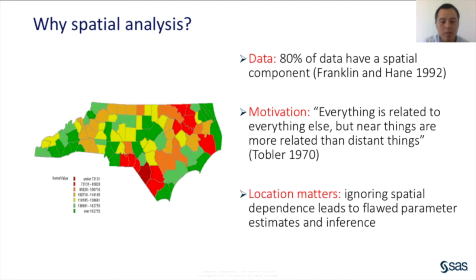While classical regression methods are widely used in many data analyses, they rely on the assumption that observations are independent from each other. This assumption of independence, however, is often unrealistic for spatial data. Moreover, ignoring spatial dependence in the data can lead to biased parameter estimates and flawed inference. Spatial data analysis, on the other hand, aims to account for spatial dependence in the data to ensure that the resulting parameter estimates and inference are correct.